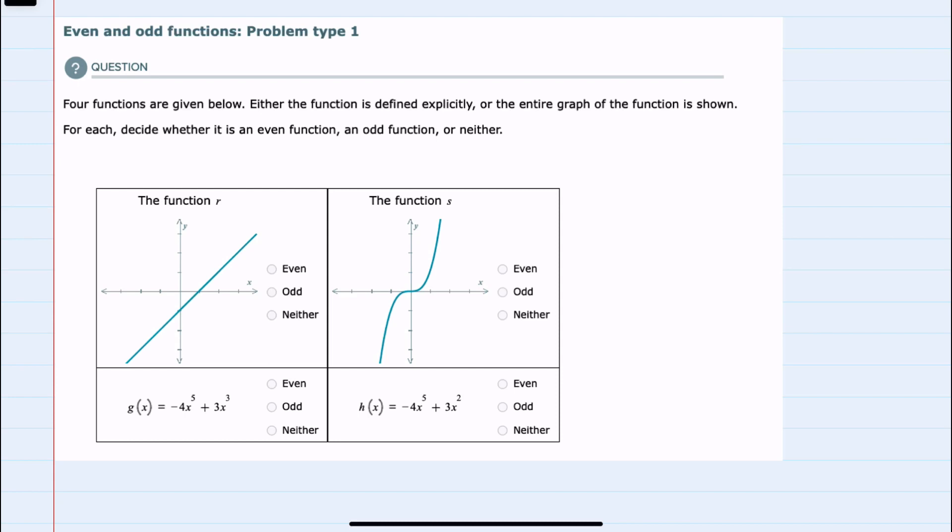In this video, I'll be helping you with the ALEKS problem type called Even and Odd Functions Problem Type 1. We're given four examples and asked to identify them as either even, odd, or neither.